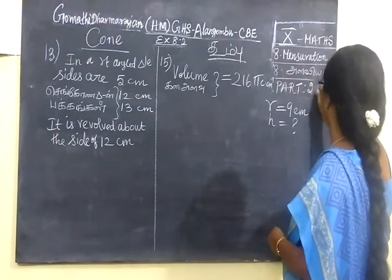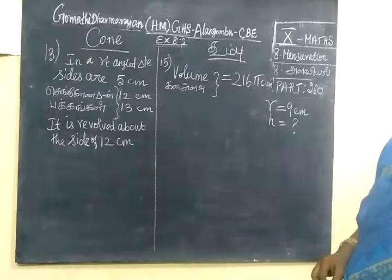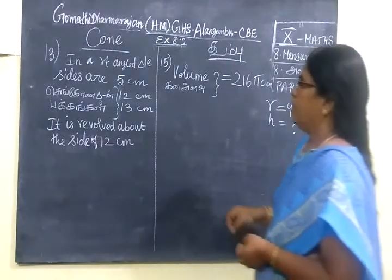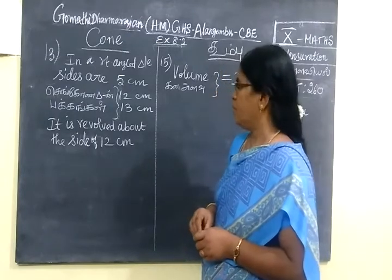Part 2.16. We are seeing 13th and 15th question. In a right angle triangle, sides are given: 5 cm, 12, and 13.